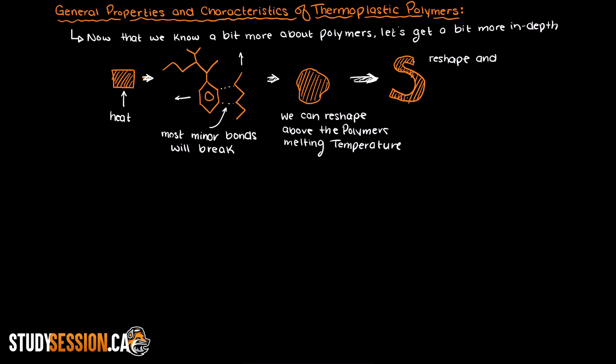Once we have the thermoplastic in the shape that we want, we remove the energy source — that is the heat — and let them cool down. Once the energy of the system is too low to break the minor bonds, the polymers become a solid again in the new shape, like this weird S shape for example.